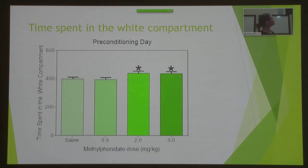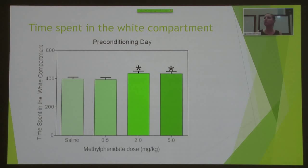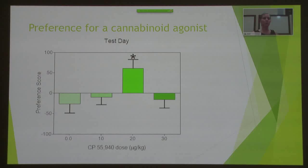Before even getting to conditioning, we found interesting data from preconditioning day. On the x-axis we have the four doses of methylphenidate, and on the y-axis we look at time spent in seconds in the white compartment. We found that the 2 mg/kg and 5 mg/kg doses actually increased preference for the white compartment. Usually rats are aversive to bright open spaces, so methylphenidate treatment appears to be enhancing their preference for the white compartment — and this is before we even introduced the cannabinoid drug.